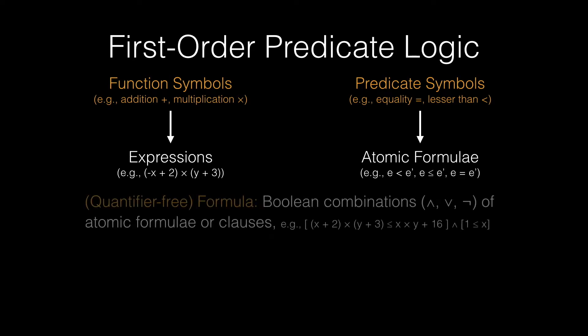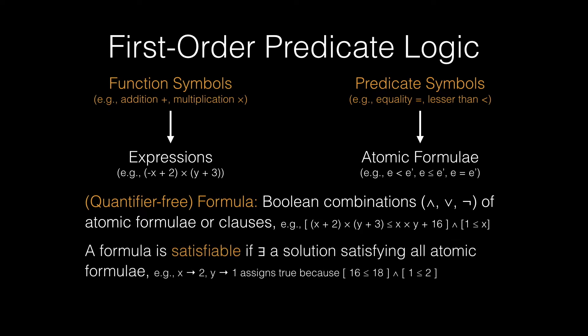A Boolean combination of expressions and atomic formulae make up what are known as quantifier-free formulae. An example is written on the second line here. This formula is satisfiable if there exists a solution that satisfies all of the atomic formulae. In this case, if x were 2 and y were 1, this would satisfy each formula.